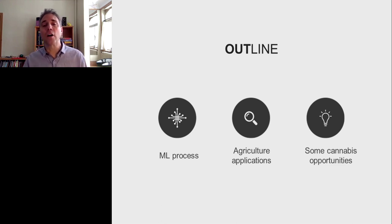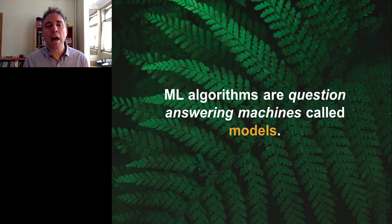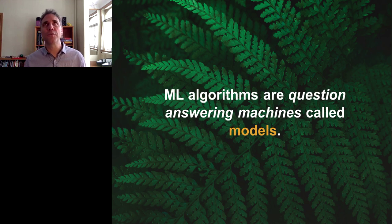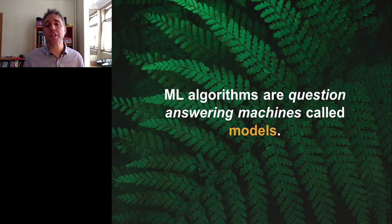Finally, I'll talk about some potential opportunities of applying machine learning to cannabis using examples from the facility that I work at. The mental model that I like to use when I think about what machine learning is — it's like machine learning algorithms are just question-answering machines. I can use lots of different machines to do the same task. The difference will be the level of effectiveness each machine performs that task. Your goal is to find the machine that works the best. In machine learning, those question-answering machines are referred to as models.